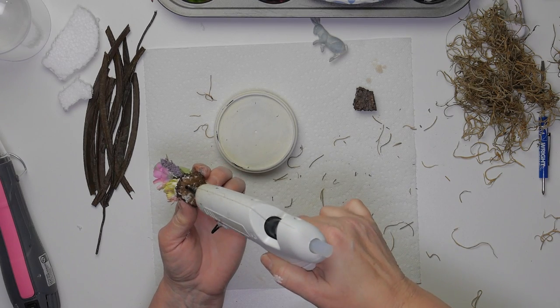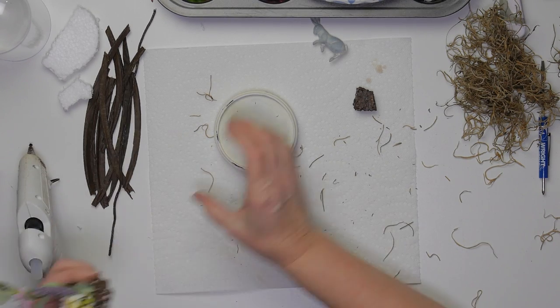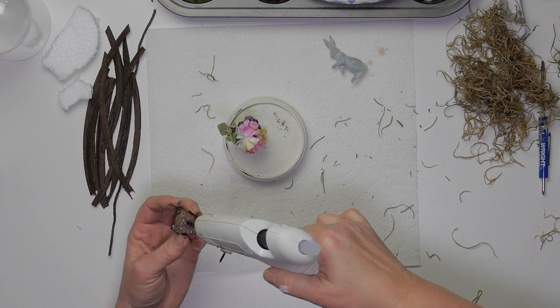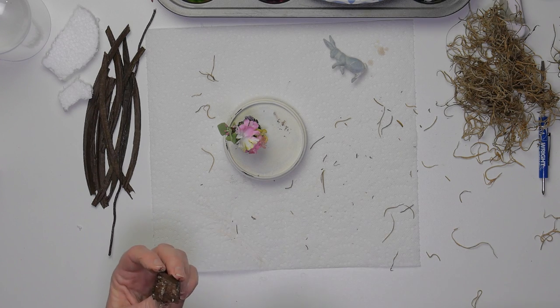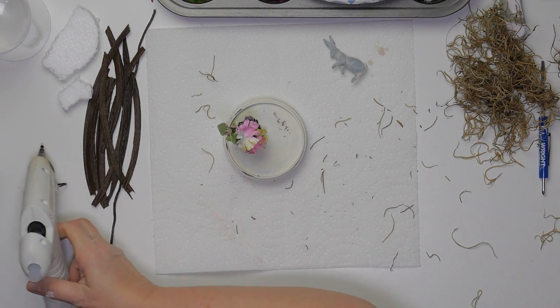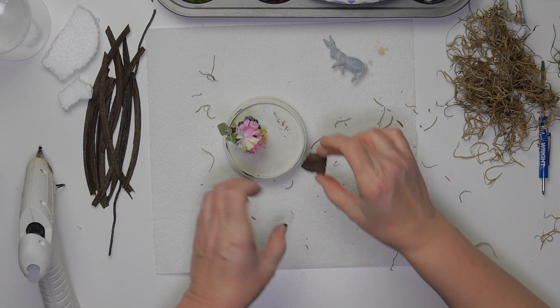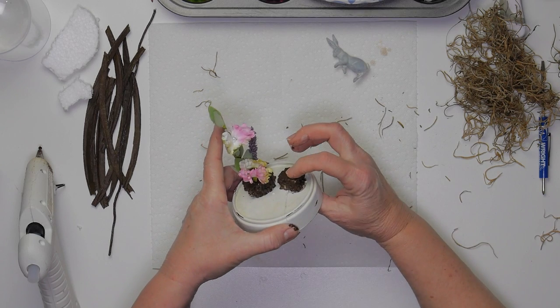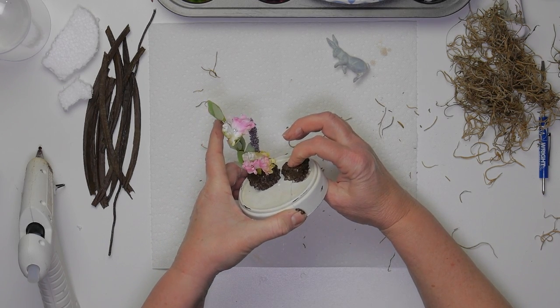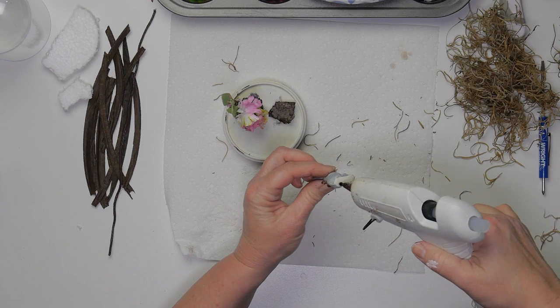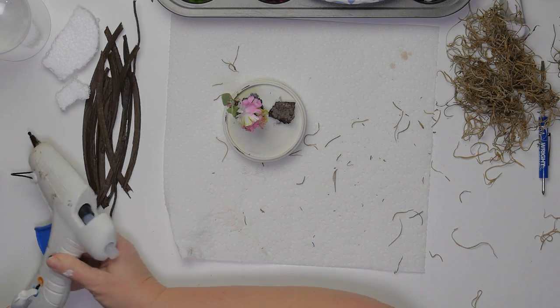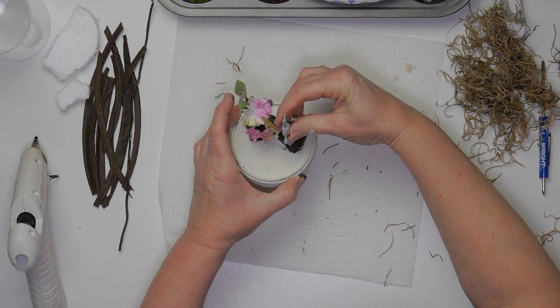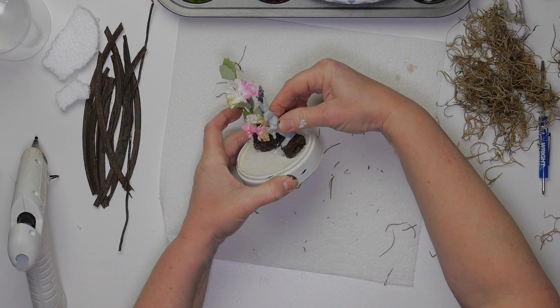I'm going to go ahead and glue on the flower base as well as the rabbit so then I can glue in the Spanish moss. I go ahead and glue them up and fluff it as it sets.